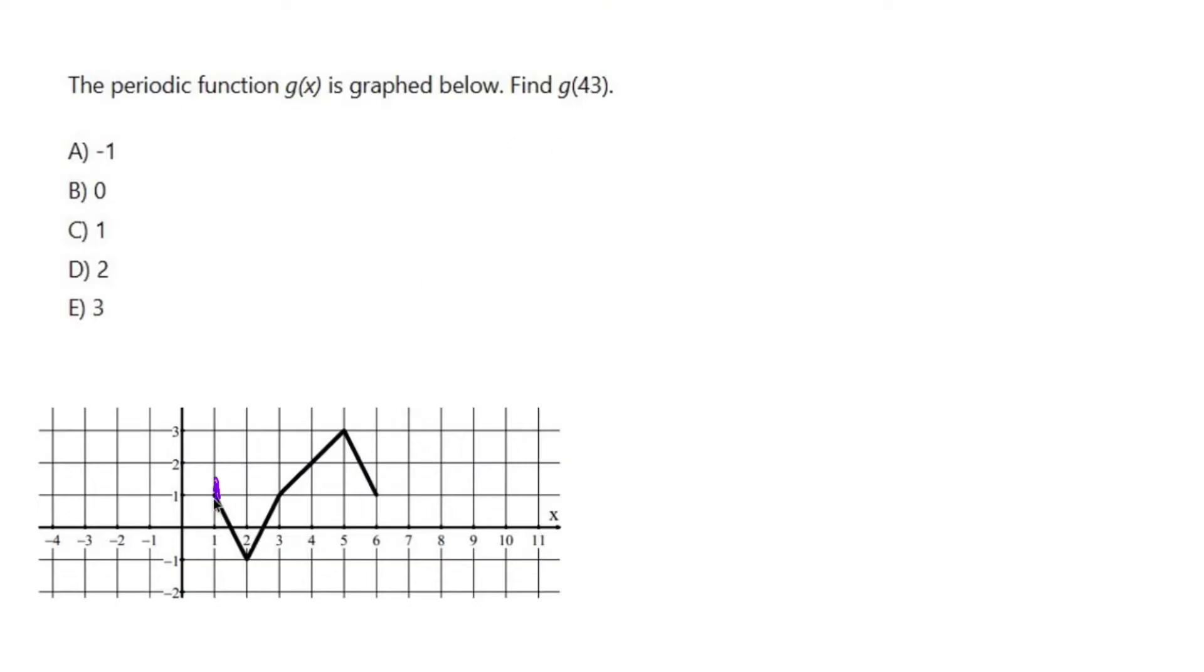Well, the period of this guy is going to be 6 minus 1, which is 5, which means this whole process repeats every 5 units.